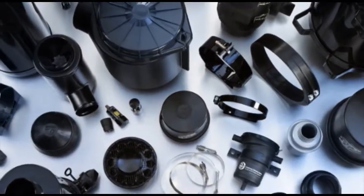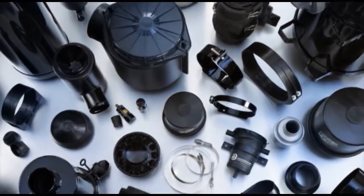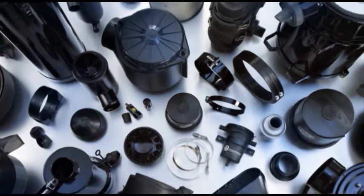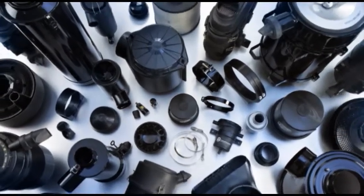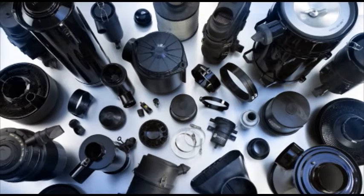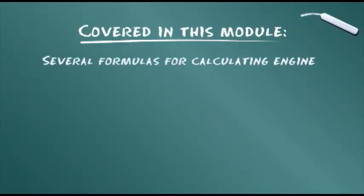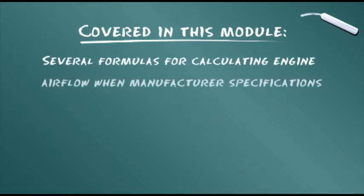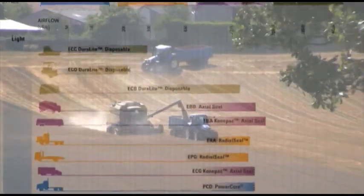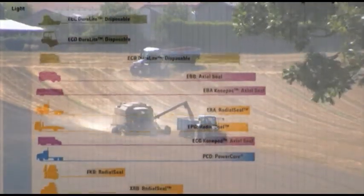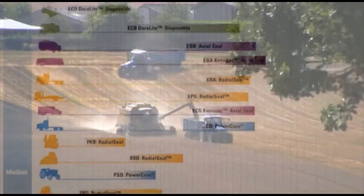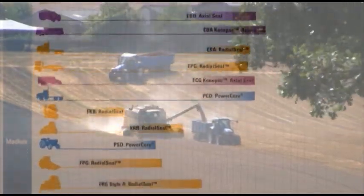This companion module to module A2A provides more technical detail and hands-on guidance in the Donaldson Air Cleaner Selection process. This module also contains several formulas for calculating engine airflow when engine manufacturer airflow specifications are not available. The color-coded Donaldson Air Cleaner Selection chart is a way to visualize the entire air cleaner range for all dust conditions.